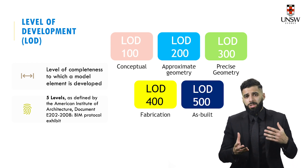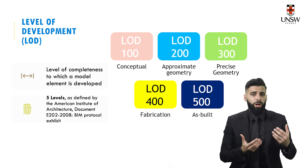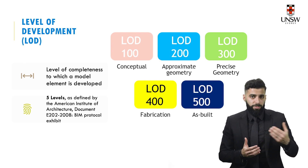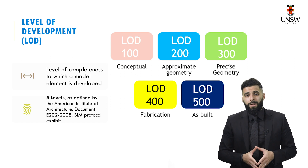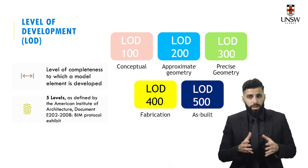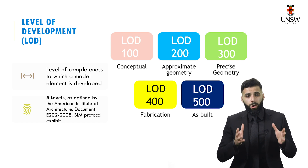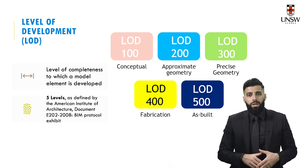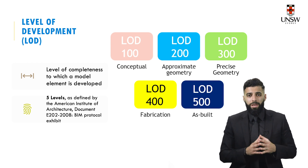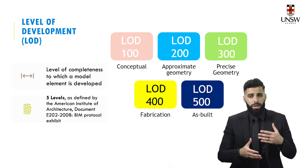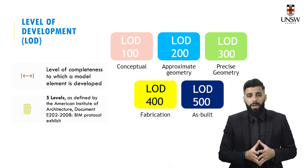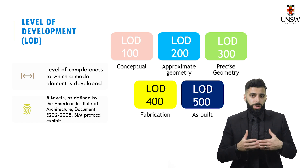An important concept in BIM is LOD — Level of Development. It indicates the level of completeness to which a model element is developed. There are five LOD levels as defined by the American Institute of Architecture in document E202 (2008), known as the BIM Protocol Exhibit: LOD 100 for conceptual designs, LOD 200 for approximate geometries, LOD 300 for precise geometry, LOD 400 for fabrication-ready models, and LOD 500 as the as-built model.